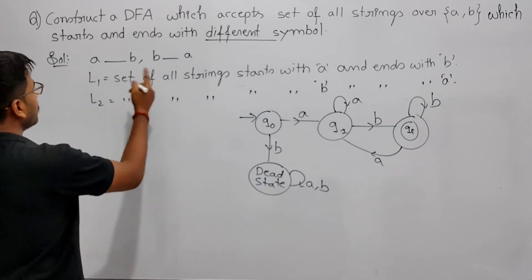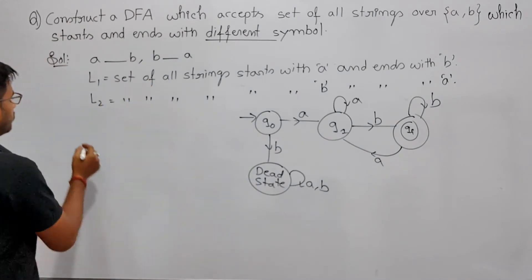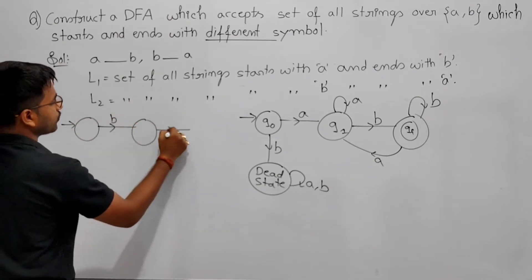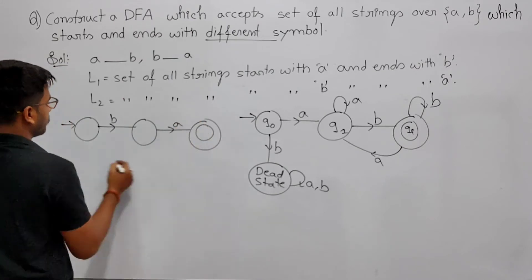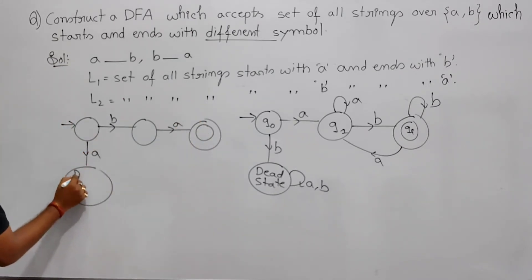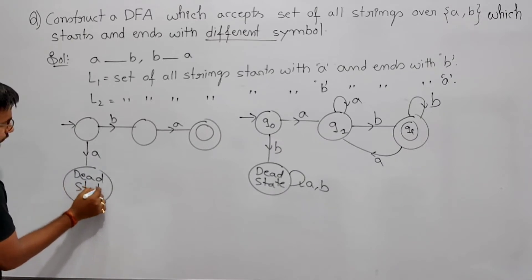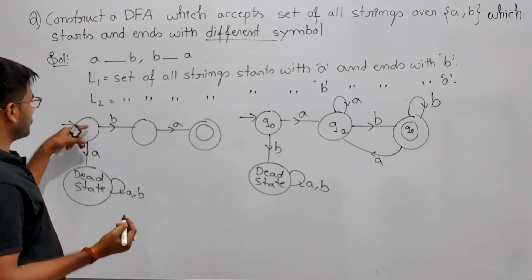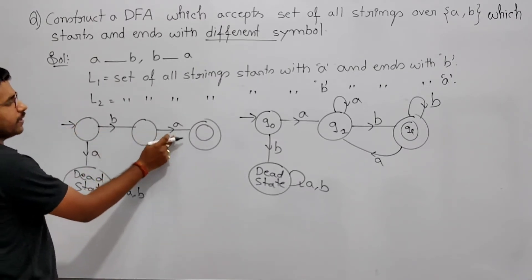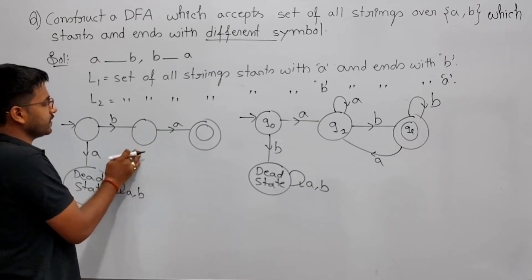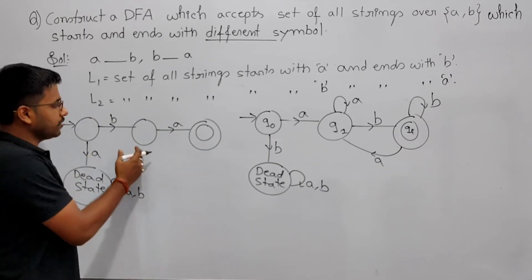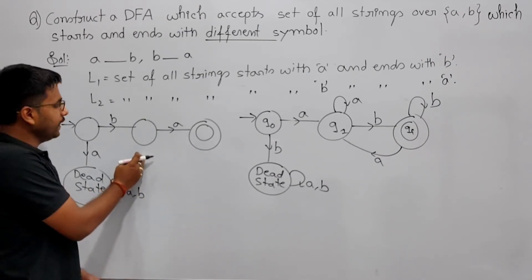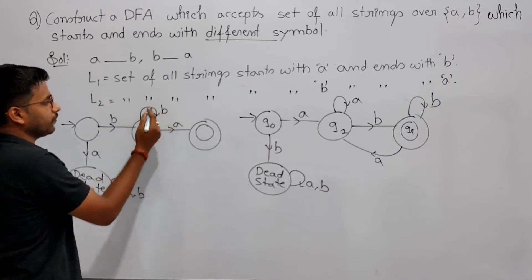Similarly we will construct the DFA for L2. For L2: starts with b, ends with a. If it starts with a you will reject it — go to the dead state. Now this state you have given the transition for a; this state you have given for a. Now if it gets b, this state confirms you have seen a b. Now check whether you are ending with a or not. If you get b, it is no more ending with a, so remain there and wait for a.